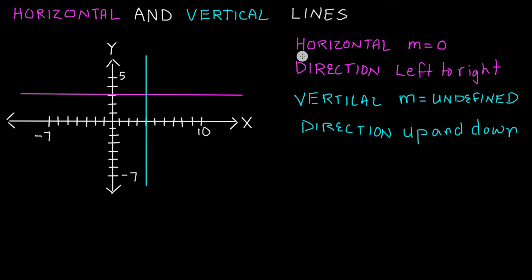So how can we describe a horizontal and a vertical line with a mathematical equation? Let's go ahead and plot the x and y components at different locations on this line.